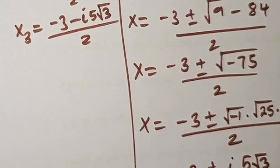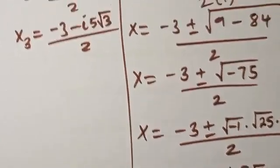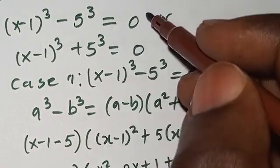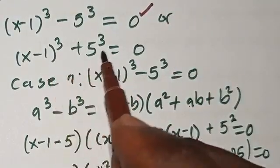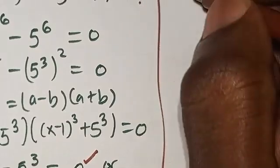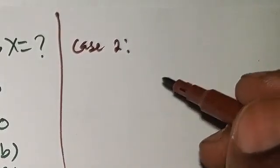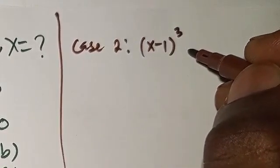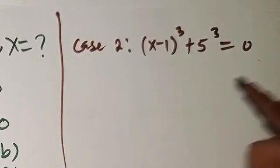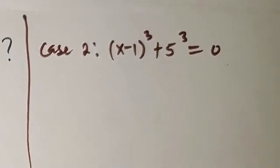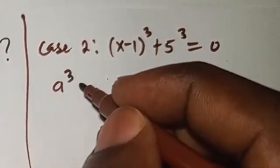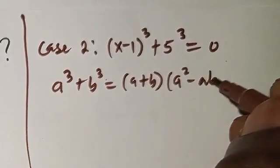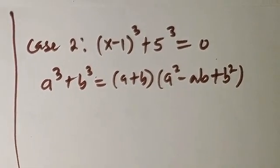Then let's look for the other solutions. We need to recall that for Case 2, we have x minus 1 to the power of 3 plus 5 to the power of 3 equals 0. We need to recall that when you have a to the power of 3 plus b to the power of 3, this gives us a plus b, then a squared minus ab plus b squared.